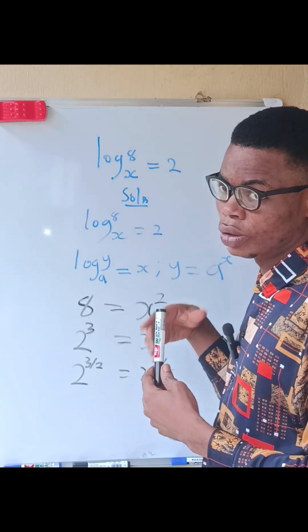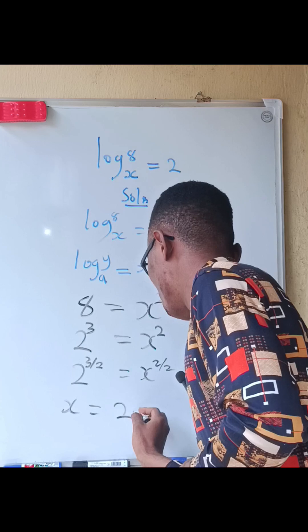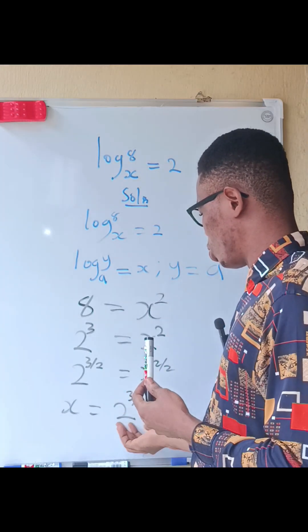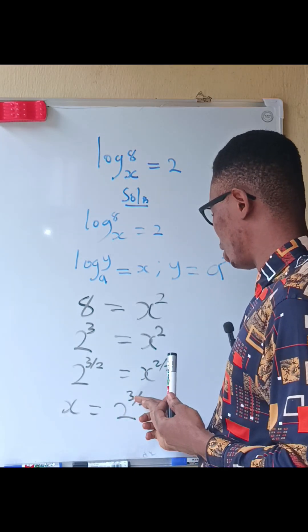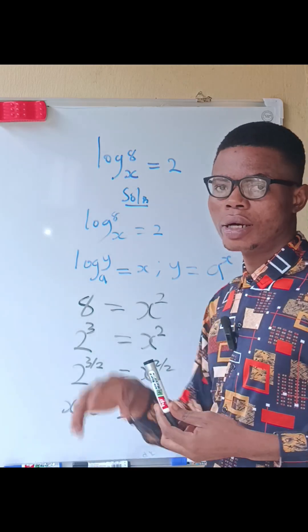So we now have that x equals 2 power 3 over 2. So the answer for x is 2 raised to the power of 3 divided by 2. So this is the answer, bye bye.